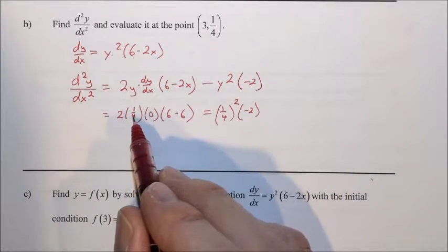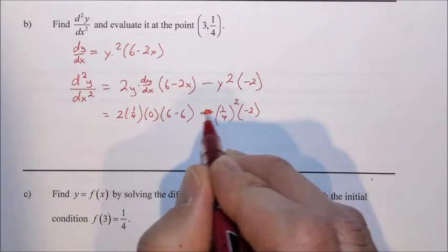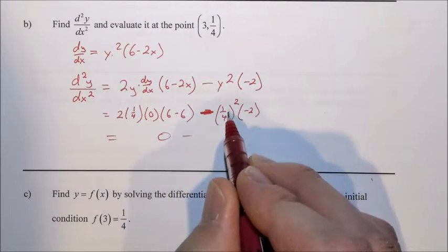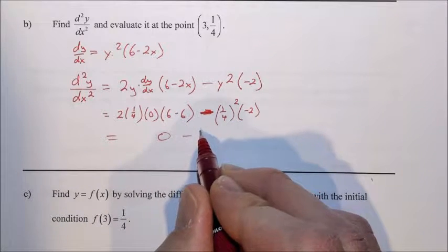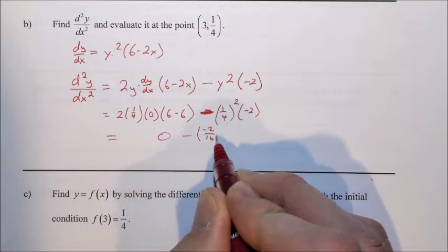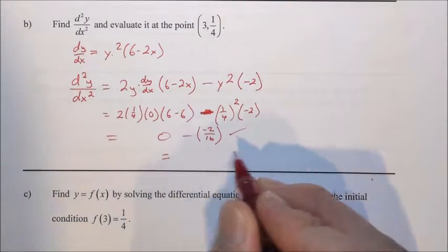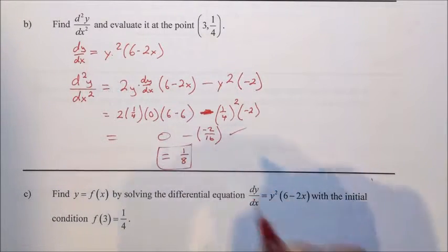We have 2 times 1/4 times 0 times 0. Pretty sure this should be a minus sign, my bad. That's going to be 0. Over here, we are subtracting 1/4 squared, which is 1/16. But we're multiplying that by negative 2. So we have negative 2 over 16. So this is a good answer. However, we can simplify this to negative 1/8. And we're done.